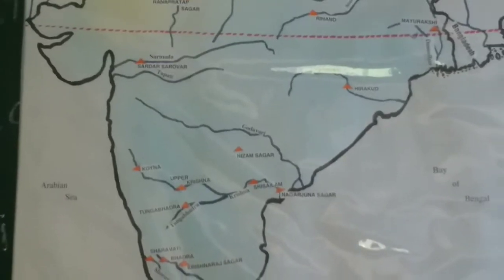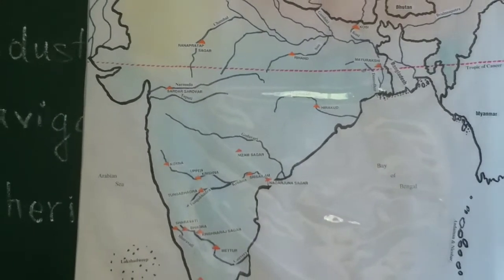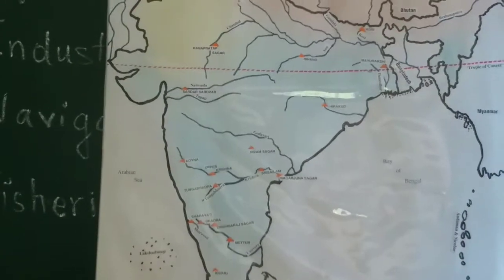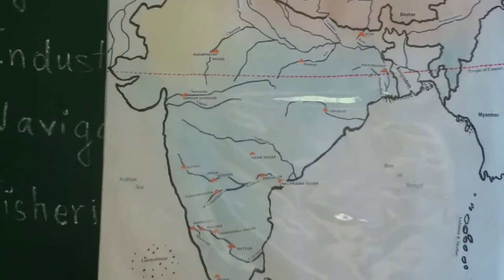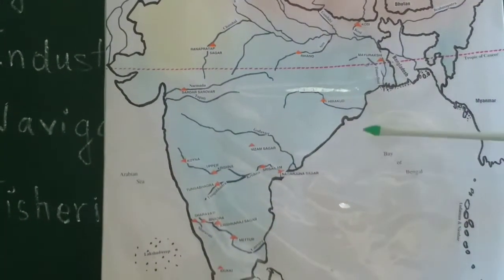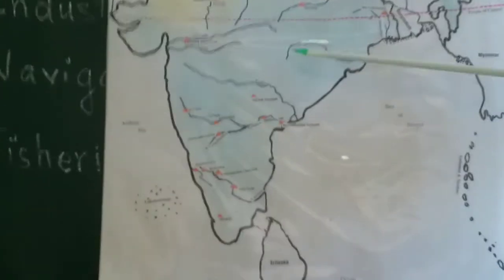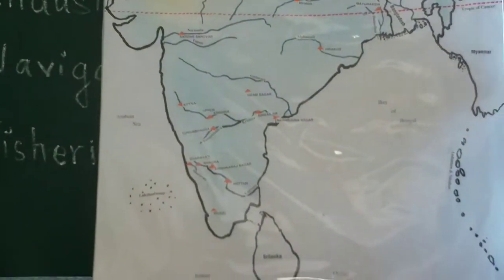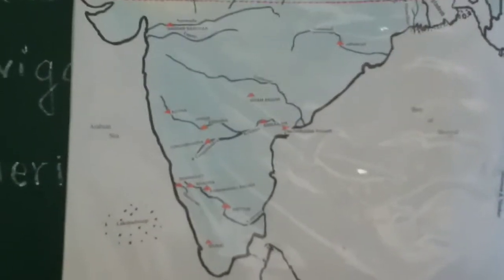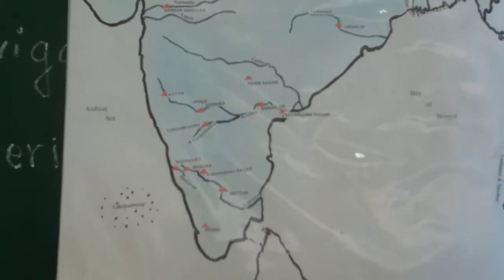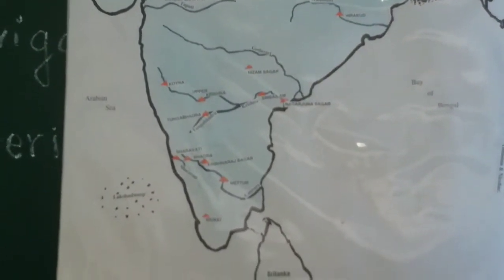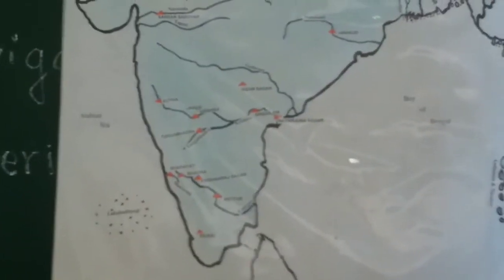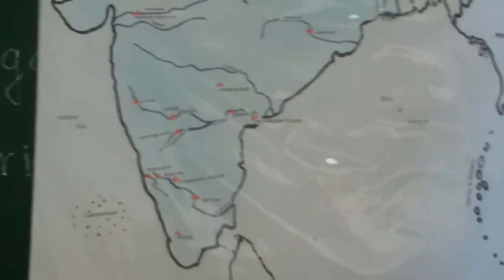Now let us take up rivers in the peninsular region — Peninsular India. We start with the Mahanadi. I want you to follow only the major rivers, rivers of great importance. Those only I will touch here; the rest you will see in the map.